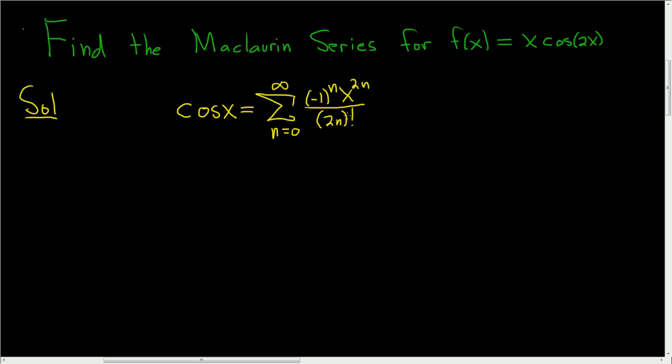An easy way to remember this is that cosine is even, so you have 2n. The sine function is odd, so you have 2n plus 1. Pretty easy trick.